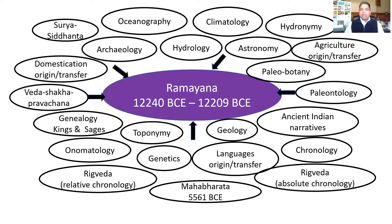My research work began with the astronomy evidence from Valmiki Ramayana. When I read Valmiki Ramayana multiple times, I could extract close to 600 specific astronomy descriptions and observations. When I put them together in a scientific fashion with logical reasoning — think of it as solving a jigsaw puzzle or a crossword puzzle — the whole evidence leads one to the 13th millennium BCE.